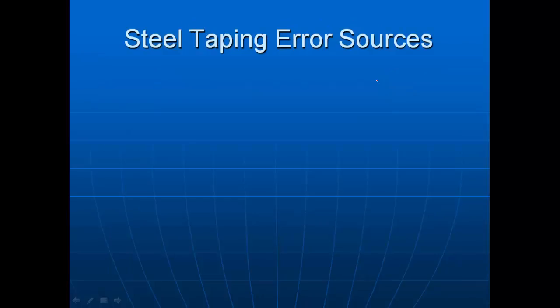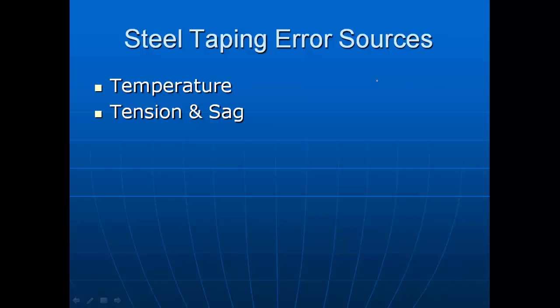We are going to use steel taping to help you learn basic concepts of error management. One of the first error sources is temperature. As things heat up, many materials expand, and as they get cold they shrink. A steel tape is the same way: as the tape heats up it gets longer; as it cools it gets shorter. Thus we have to know the temperature if we want a very accurate reading using a steel tape.